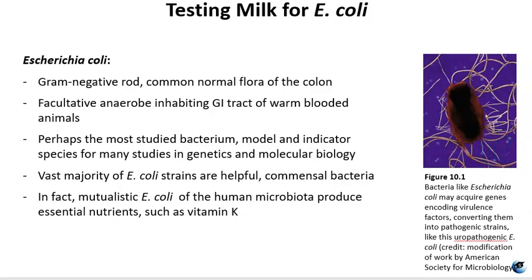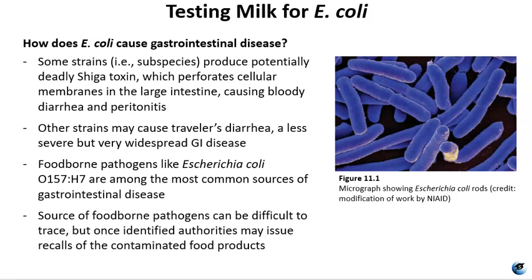This figure, figure 10.1, shows an electron micrograph of E. coli. It also mentions that E. coli may acquire genes encoding virulence factors, which convert them into pathogenic strains. Some strains produce a shiga toxin which perforates cellular membranes in the large intestine, causing bloody diarrhea. Other pathogenic E. coli strains cause traveler's diarrhea — a less severe but very widespread GI disease. Food-borne pathogens such as E. coli O157:H7 are among the most common sources of GI disease. Sources of food-borne pathogens can be difficult to trace, and once tracked down, this is where you hear of food recalls — such as recent recalls due to E. coli in lettuce.